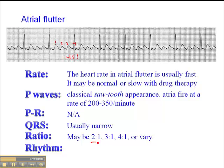The ratio may vary — it may be 2 to 1. If you have atrial flutter with a 2 to 1 ratio, you probably have a very fast tachycardia, and in fact it may look exactly like a supraventricular tachycardia. It may be indistinguishable from SVT until that heart rate slows down, at which point the flutter waves may become apparent and you know you're dealing with atrial flutter rather than AV nodal reentrant SVT or pre-excitation syndrome SVT.